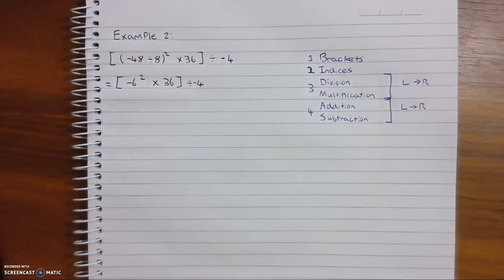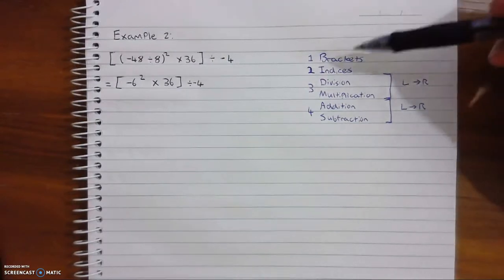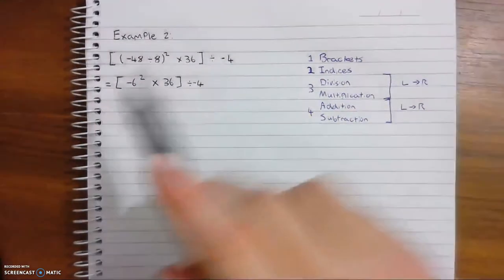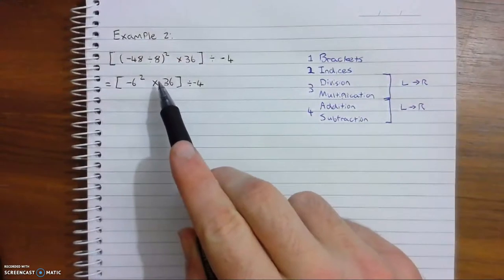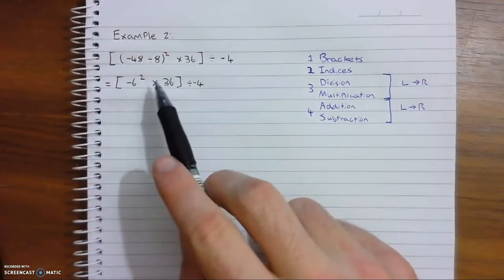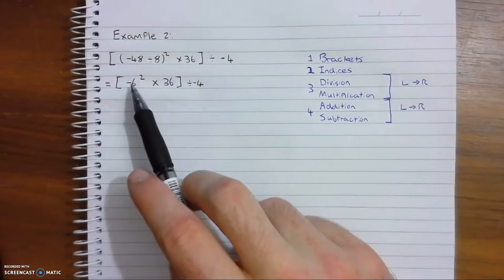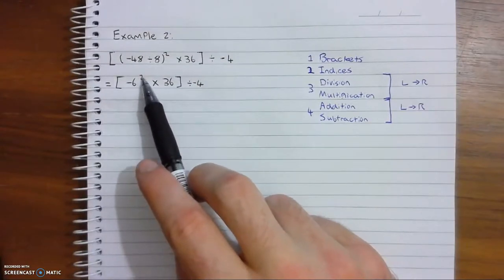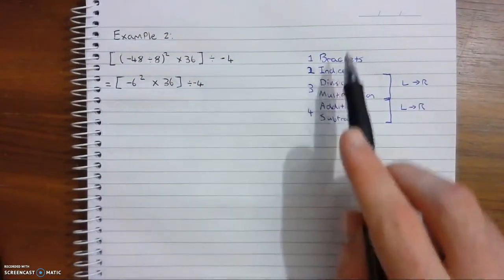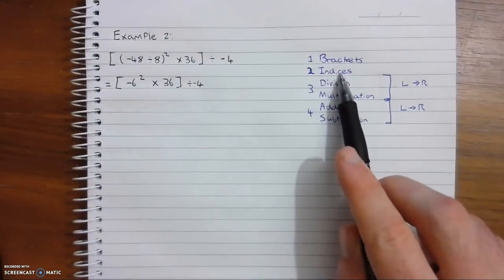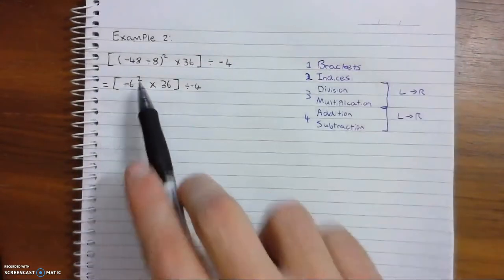Alright, now we can move on. Back to brackets. We're still on the brackets because we still have another set of brackets. We know we still do whatever's inside this first. And now we refer to either doing indices or times. Indices is before multiplication, so we do this one first.